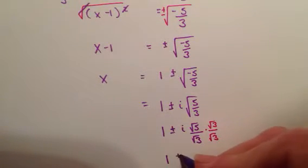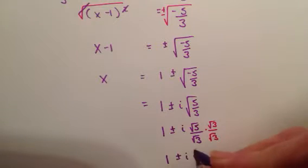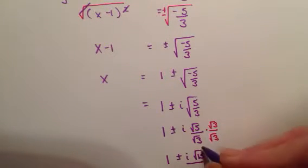Now, I have 1 plus or minus i root 15 on the top. And on the bottom, square root of 3 times square root of 3 is just 3.